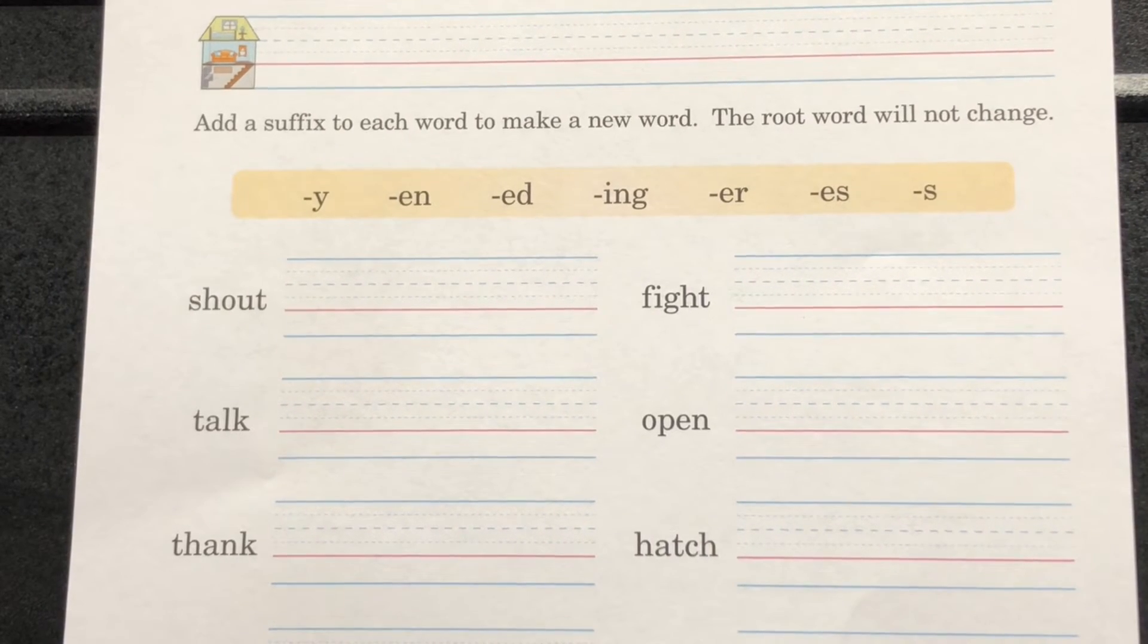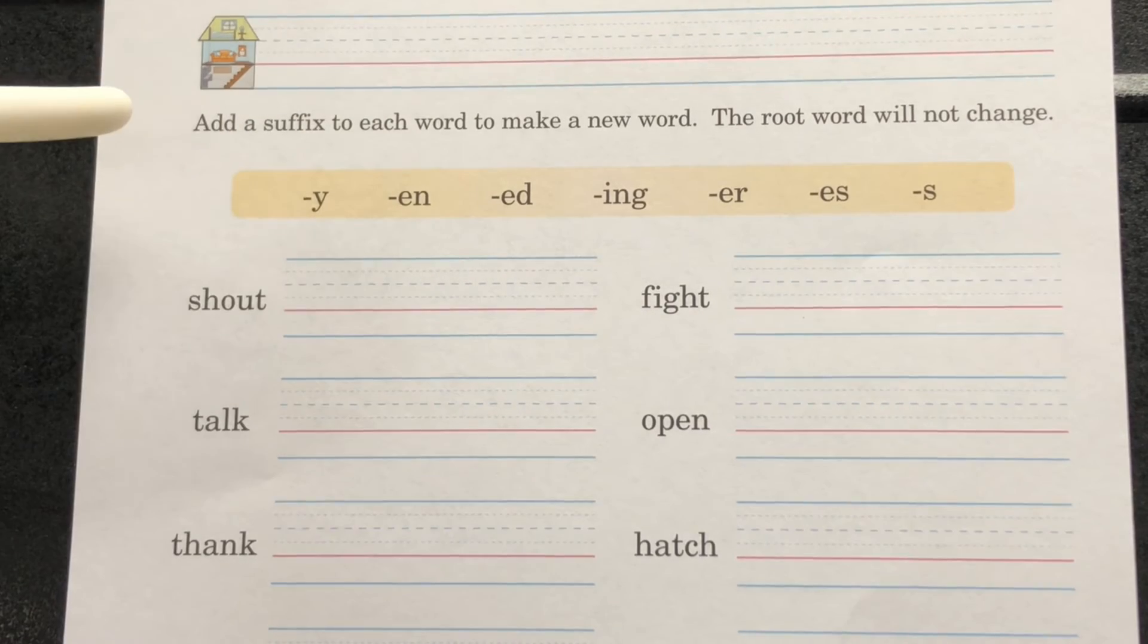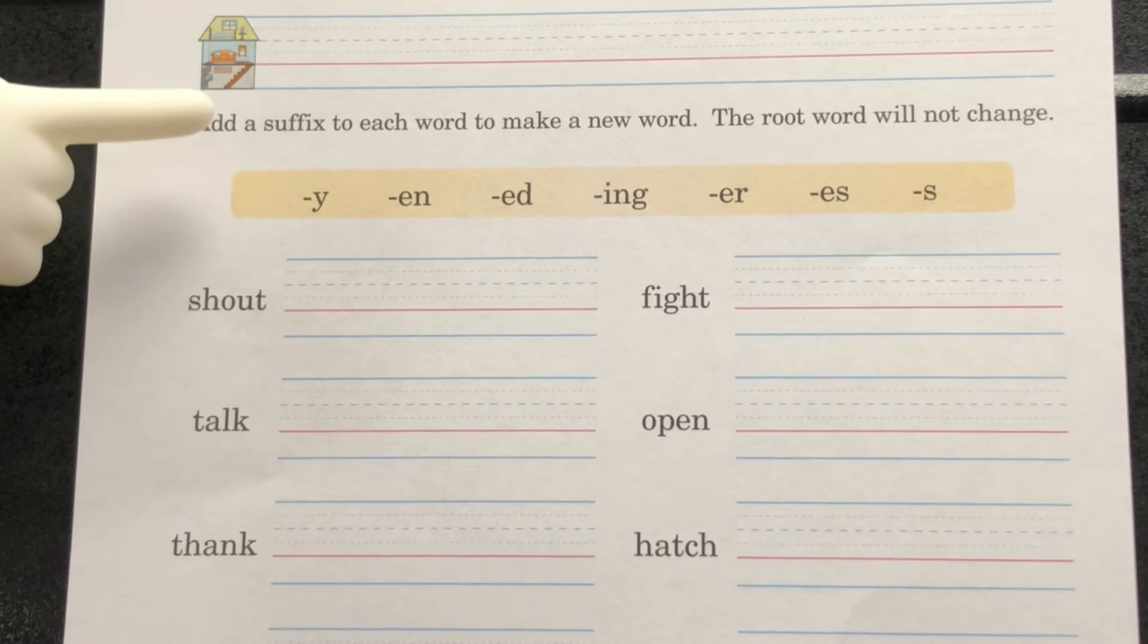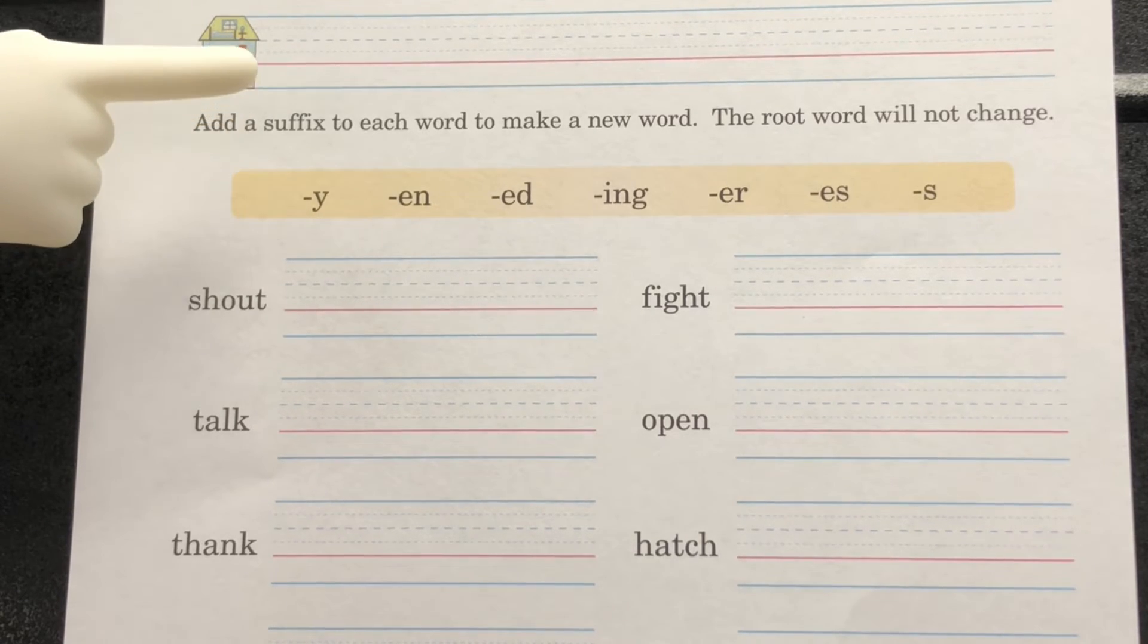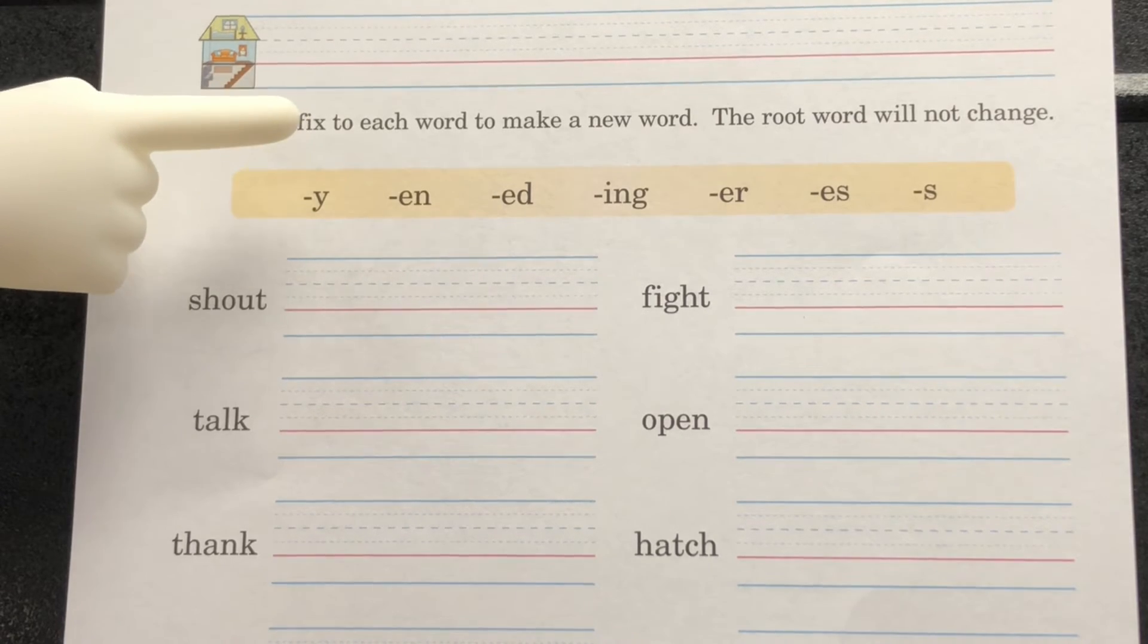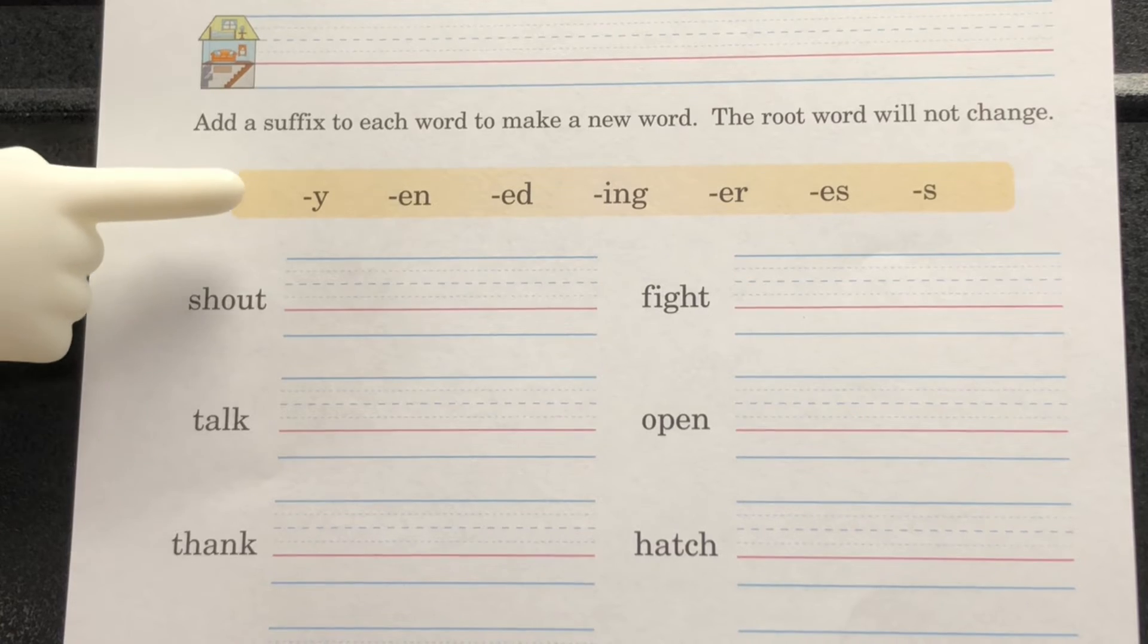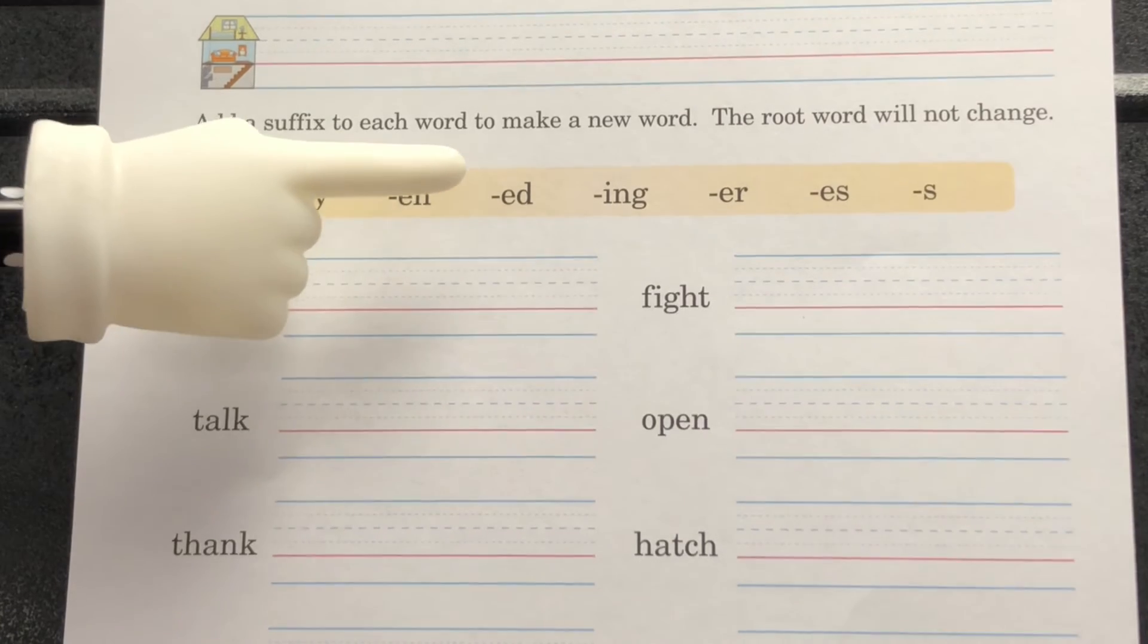Take a look at our Letters and Sound page 169. As always boys and girls, please make sure you have your name on your paper. Let's take a look at the directions. Add a suffix to each word to make a new word. The root word will not change. So here you have the suffix Y in rainy, EN in enjoy, ED in wanted, T in looked, D in played,